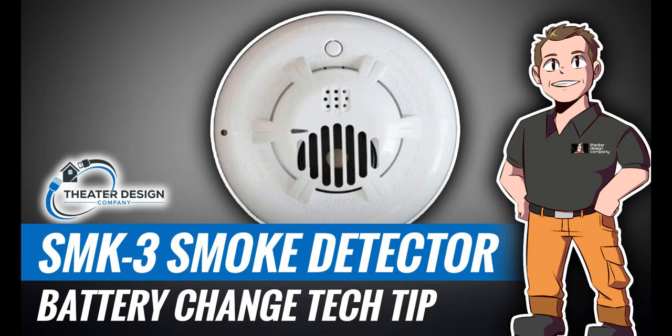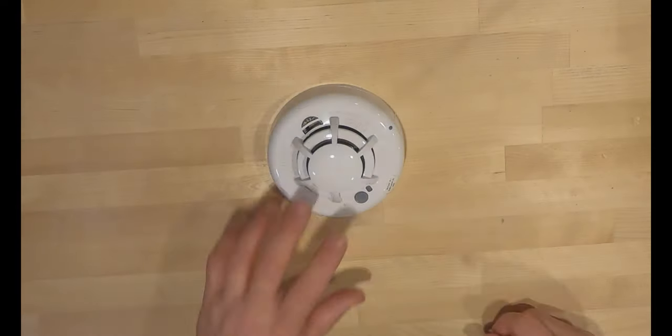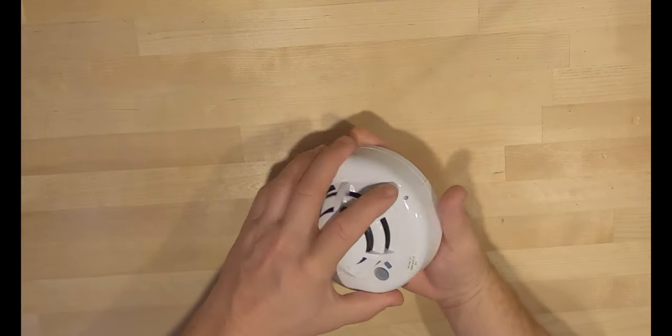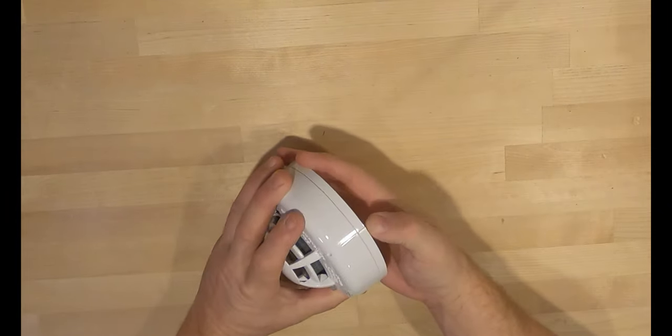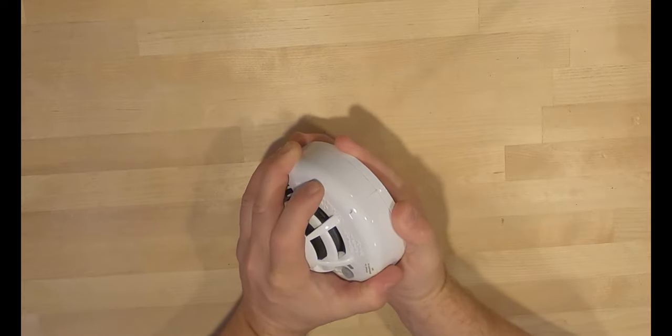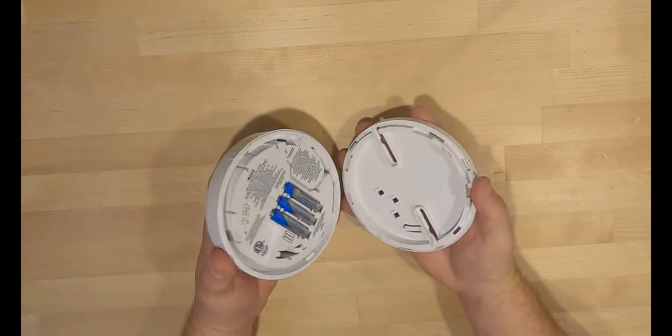The first one we're going to do is with the Smoke 3 sensor from 2 gig. To release the Smoke 3, it'll obviously be mounted to your ceiling. Turn it counterclockwise.